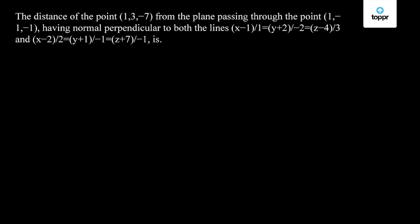Hi guys. The question states that the distance of the point from the plane passing through a point, having a normal perpendicular to both the lines x-1 by 1 equal to y-2 by 2 equal to z-4 by 3, and x-2 by 2 equal to y-1 by -1 equal to z-7 by 1. So we need to find the distance of point A from the plane P that is passing through the point and whose normal is perpendicular to the given lines.